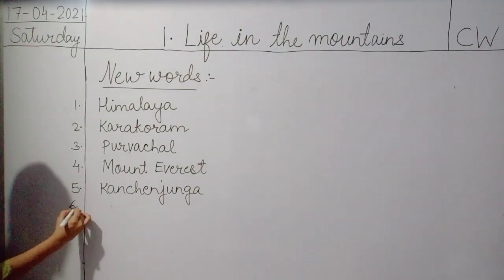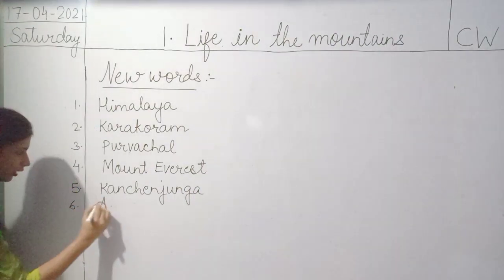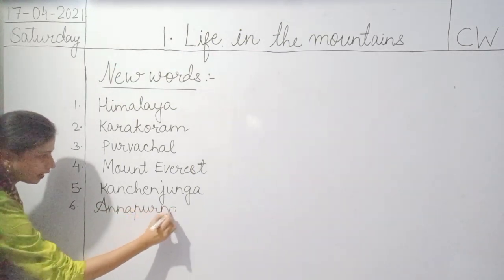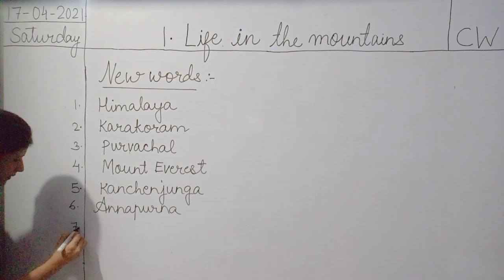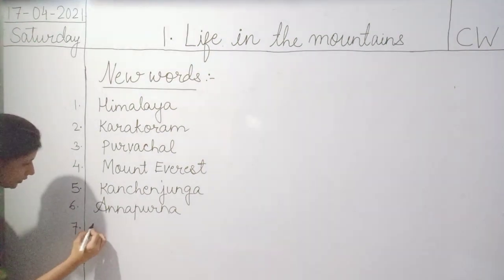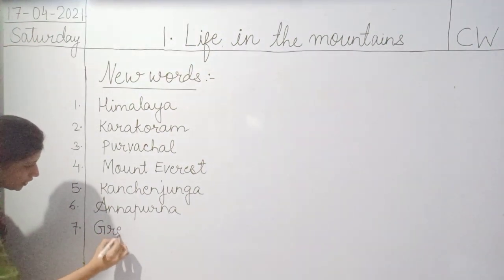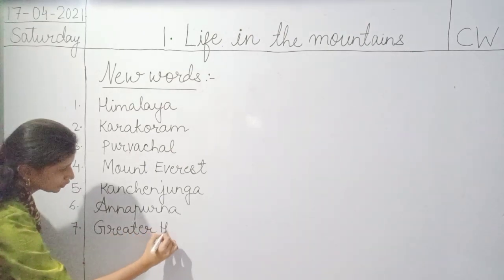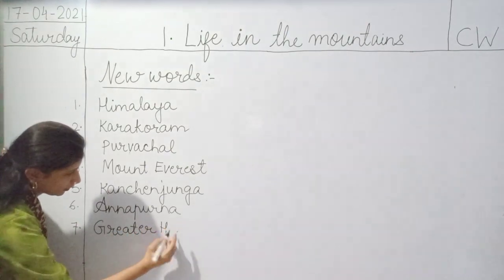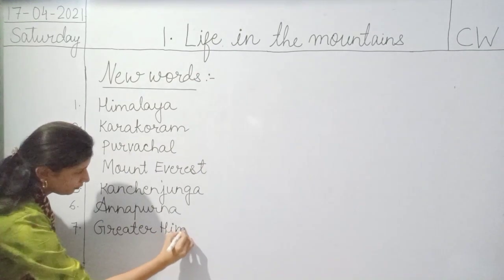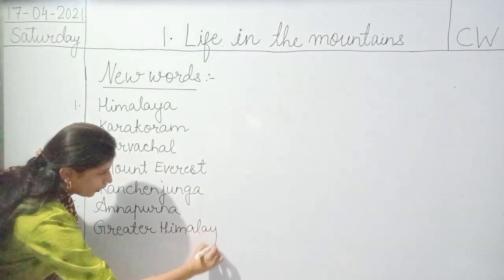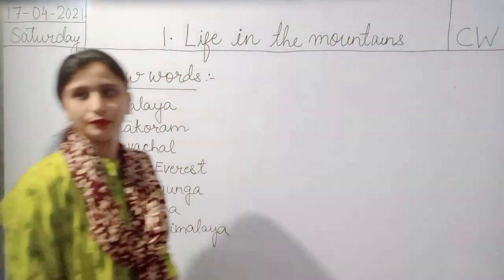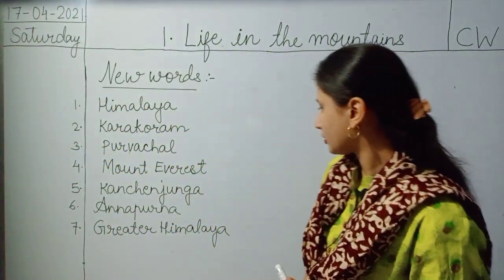The sixth one is Annapurna — A-N-N-A-P-U-R-N-A. The seventh one is Greater Himalaya — G-R-E-A-T-E-R H-I-M-A-L-A-Y-A. This is the seventh one.